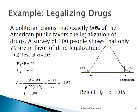Here's another problem, very similar to the previous one. A politician claims that exactly 90% of the American public favors legalizing drugs. A survey of 100 people shows that only 79 are in favor of drug legalization. Test at alpha equal 0.05.